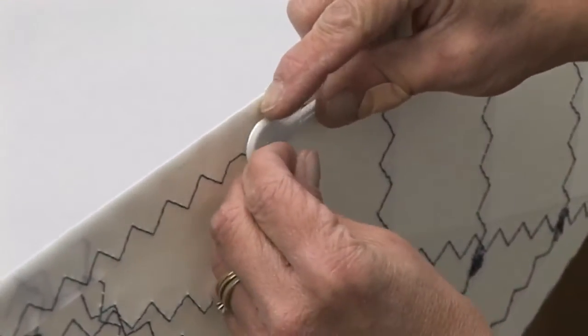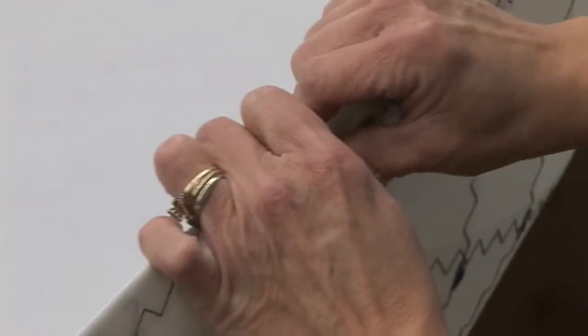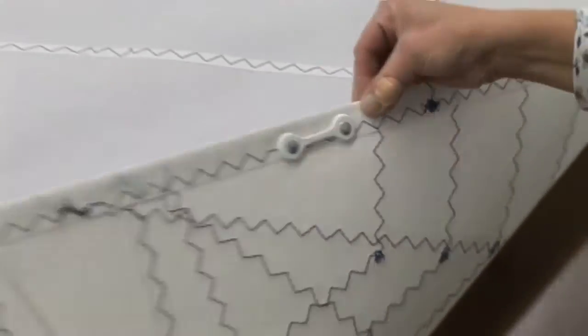There are such things as sew-on cleats. Those would be done with the pre-waxed twine and a hand needle.